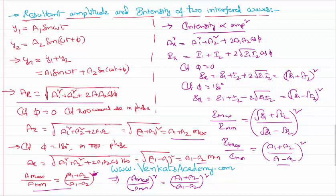That's how we can express maximum and minimum amplitudes, which are further going to cause bright and dark spots in our interference pattern. Thank you for watching — keep coming back for more video lessons, thank you.